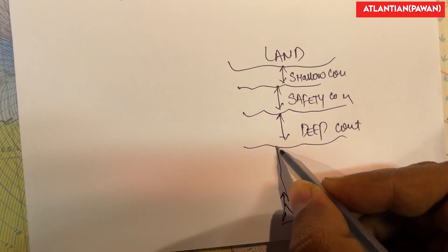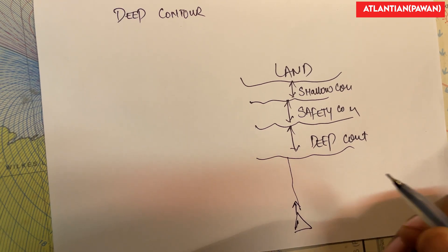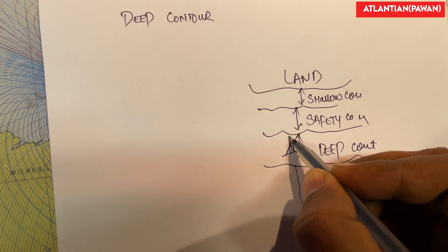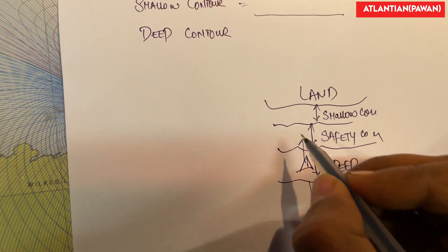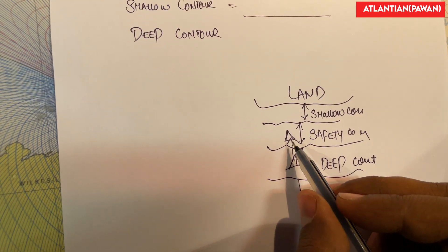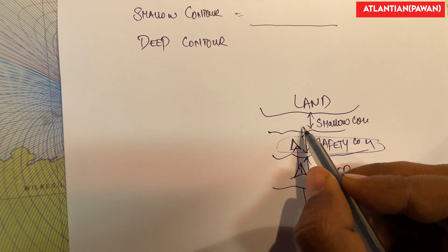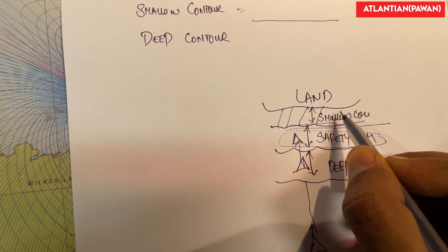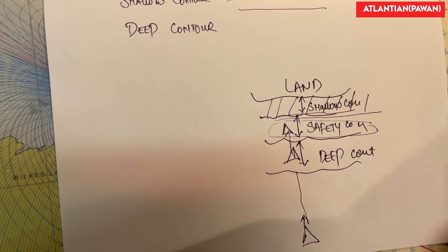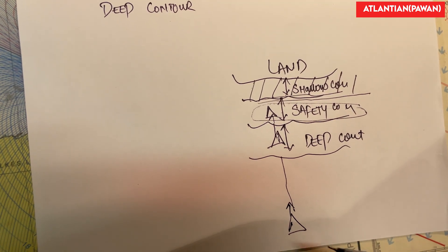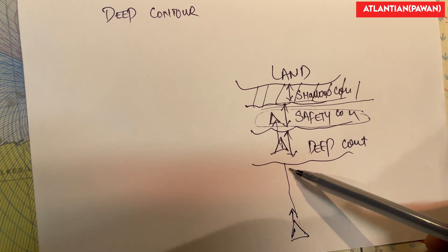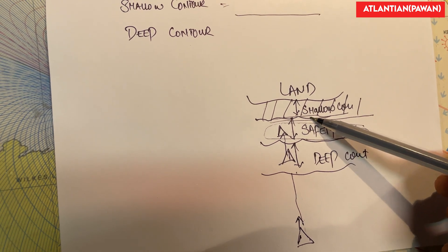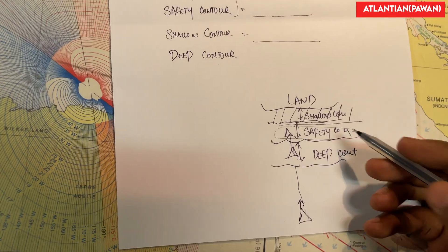Once my vessel enters the deep contour, it will start experiencing higher squat. As my vessel continues to move inside and reaches the safety contour, I know that my vessel can safely navigate within this area. I should steer clear from the shallow contour because if my vessel comes inside that area it may run aground. So once a vessel comes from the ocean, first it will see deep contour, then safety contour, then shallow contour.